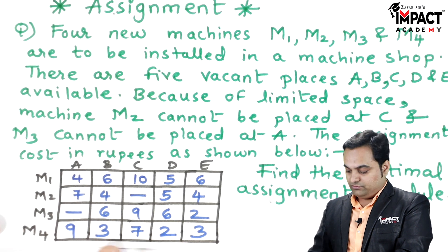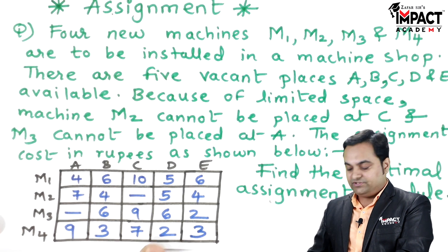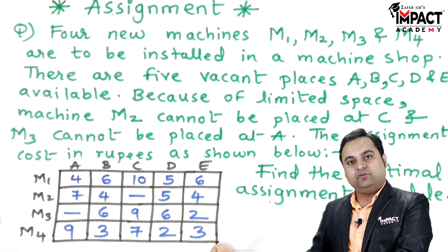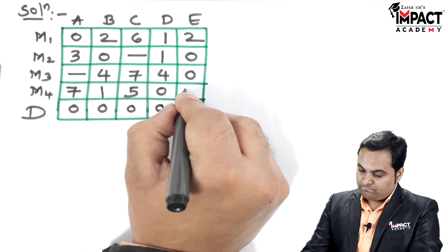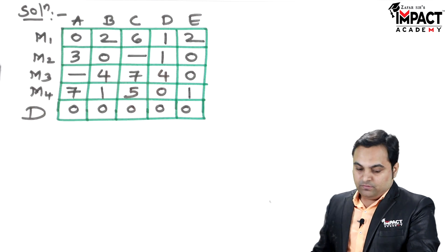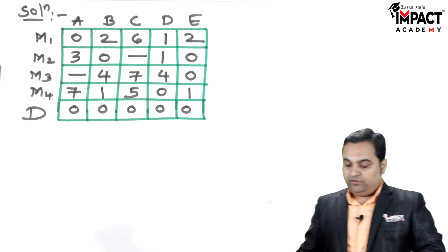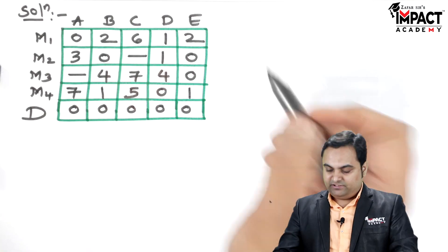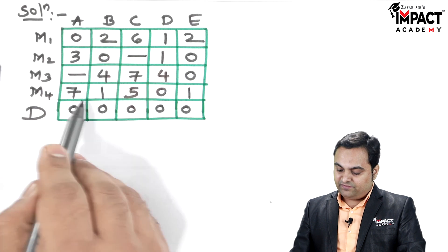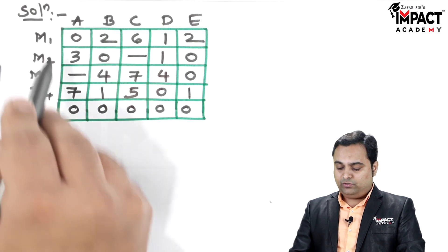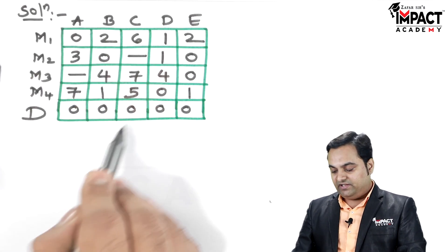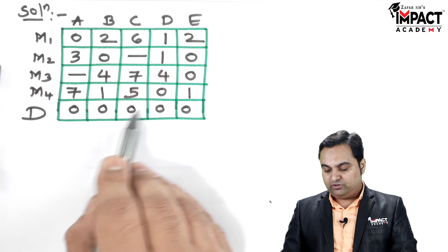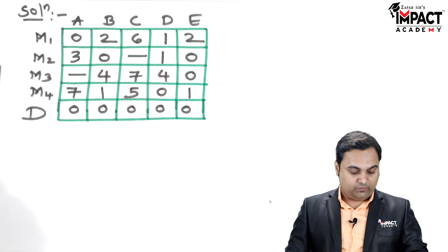For row 4, the least element is 2, so we subtract 2 from each term. We then verify that zeros are present in each row — yes they are — and zeros are present in each column as well, because of the dummy row.